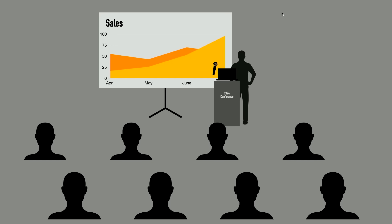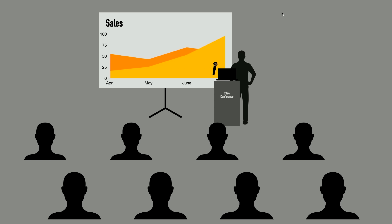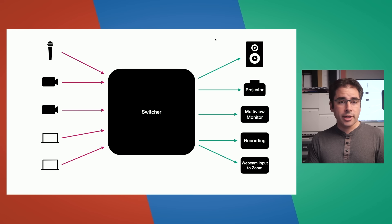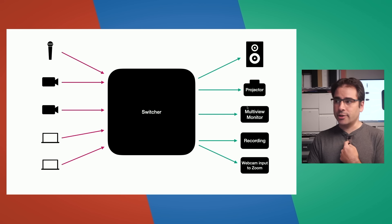Now let's talk about what I want to feed the projector with. In the room, I'm going to want to show basically two things: one is a full-screen version of whatever is on the presenter's laptop, and the second is my break screen — for between sessions when there's no laptop connected or when they're fiddling with video settings. I need to switch between these two on the projector very quickly. So looking at all the connections in and out of the switcher, we need four video inputs, some audio input, and two outputs — one for the projector and one for multiview.